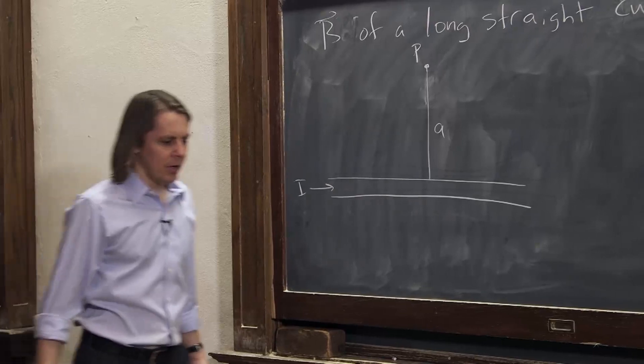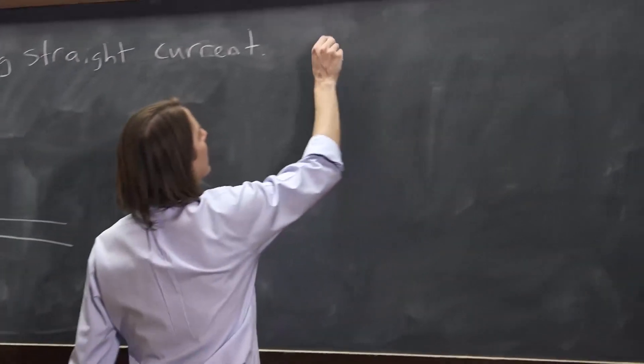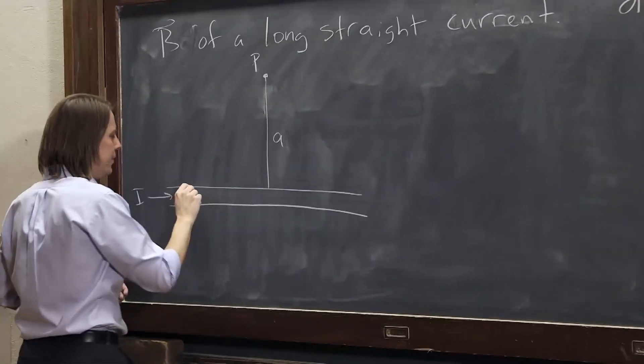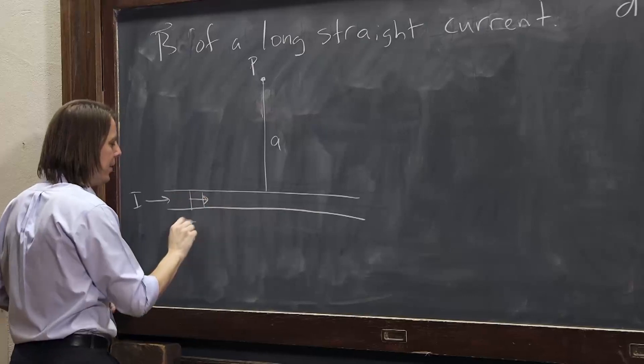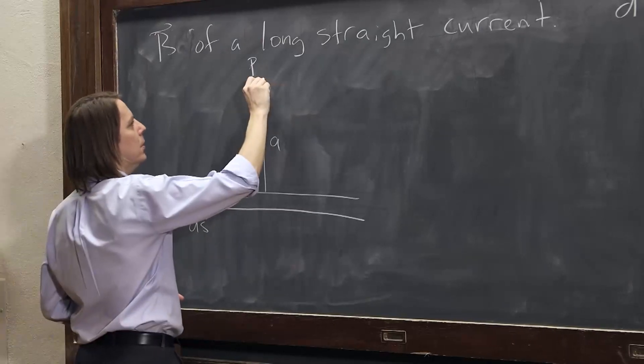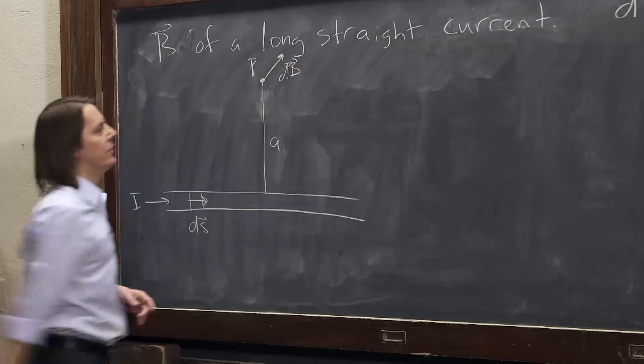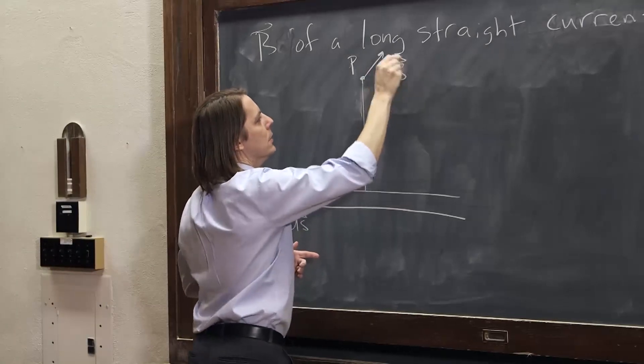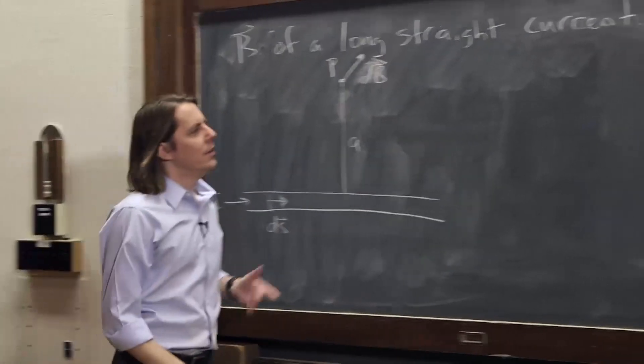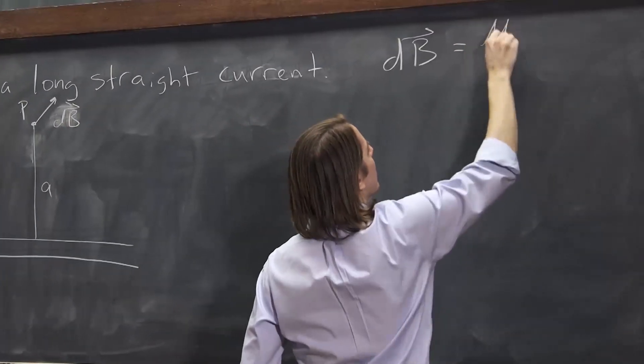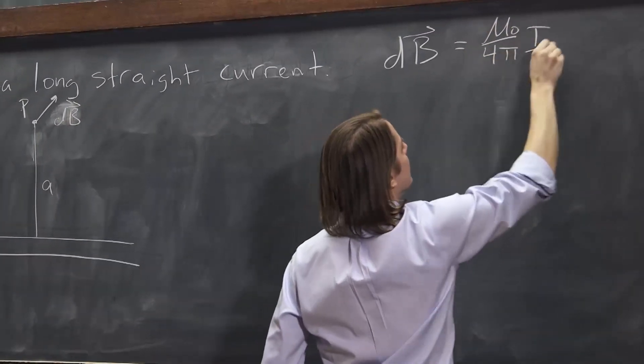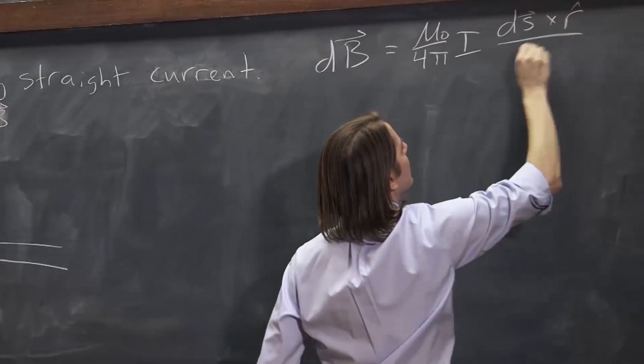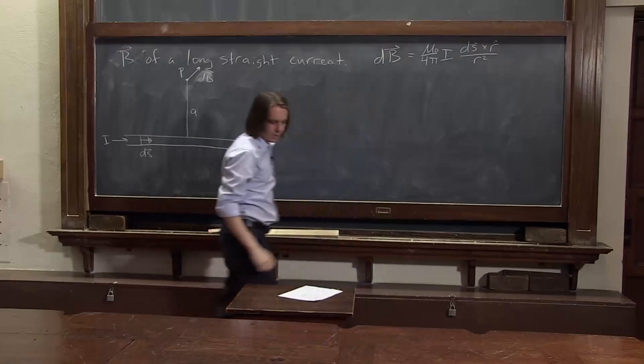So we apply the Biot-Savart law. Let's go ahead and just write that differential from the Biot-Savart law. dB, the little differential field element that's created by a little ds is really what Biot-Savart tells us in this case. That's the little dB. And you can imagine we're going to sum it up. So dB is μ₀ over 4π times I times ds crossed with r̂ over r².